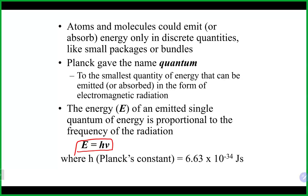Using c = λν, we can solve for frequency as c divided by wavelength and substitute into E = hν, giving us E = hc/λ. So the energy equals h times frequency, or equivalently hc divided by wavelength. If you know either the frequency or the wavelength of the light coming off, you can calculate the energy associated with that photon. Note: wavelength must be in meters for everything to cancel properly.